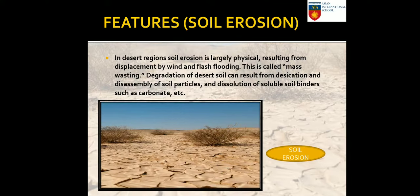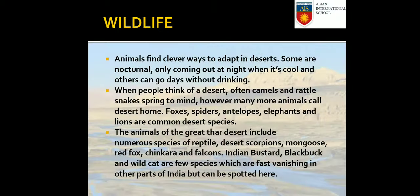Soil erosion is another feature of the desert. In desert regions, soil erosion is largely physical, resulting from displacement by wind and flash flooding — this is called mass wasting. Degradation of desert soil can result from desiccation and disassembly of soil particles and dissolution of soluble soil binders such as carbonates.